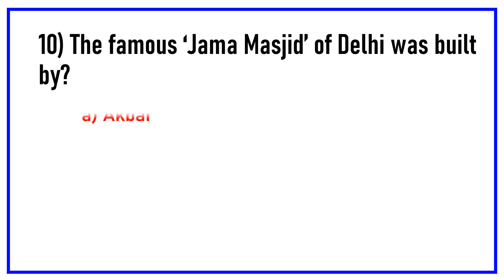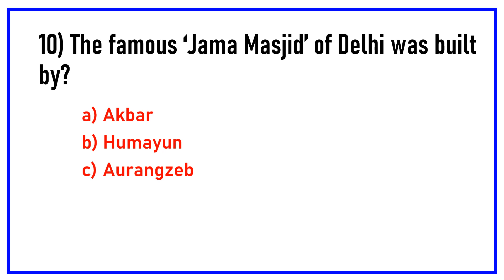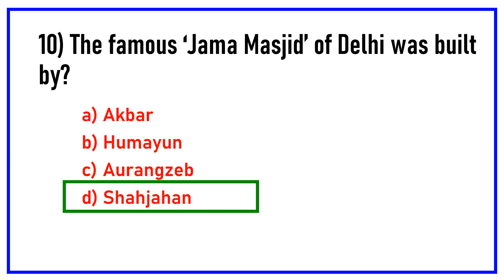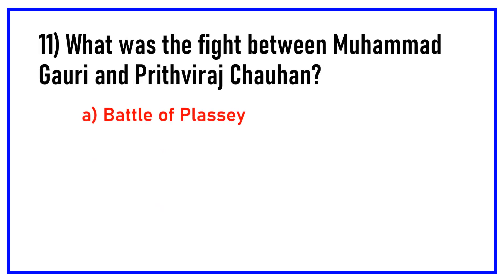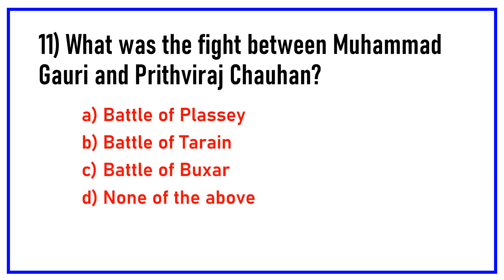The famous Jama Masjid of Delhi was built by. Options are: Akbar, Humayun, Aurangzeb, Shah Jahan. Answer: Shah Jahan. What was the fight between Muhammad Gauri and Prithviraj Chauhan called? Options are: Battle of Plassey, Battle of Tarain, Battle of Boxer, none of the above. Answer: Battle of Tarain.